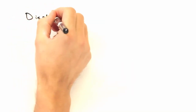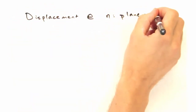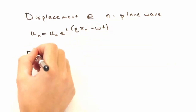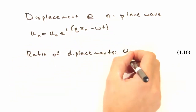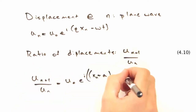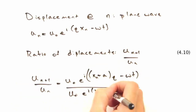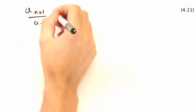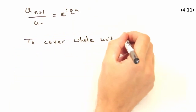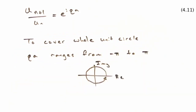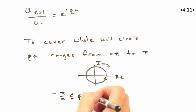Recall we defined our displacement for a particular atom at position n as a plane wave like so. Let's begin by looking at the ratio of displacements between atom n and its neighbor at position n plus 1. So after some cancelling, we end up with e to the i qa. And to cover the whole unit circle, qa would need to be between minus pi and pi, so q would be between minus pi over a and pi over a.